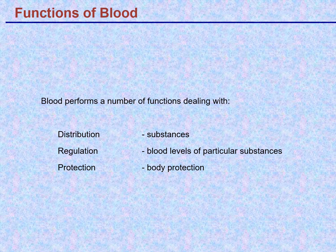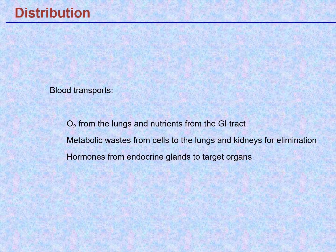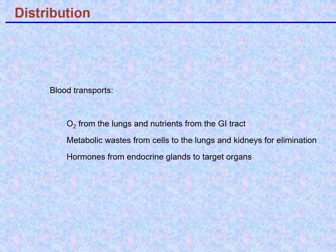Those immune cells have non-specific and specific immune function and can protect the body, along with other protective proteins. In terms of distribution: oxygen from the lungs and nutrients from the GI tract get distributed around the body; metabolic waste from cells gets moved to the lungs and kidneys for elimination — CO2 is eliminated at the lungs, and quite a few waste molecules including nitrogen are eliminated at the kidneys. Blood also transports hormones from endocrine glands to target organs or tissues that have the right receptor for each particular hormone.